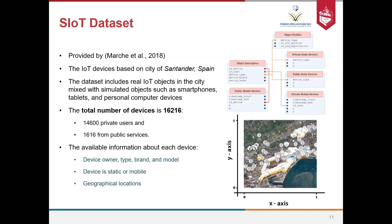In my work, I used a Social Internet of Things dataset from the city of Santander in Spain. This city has many IoT devices — around 16,000 in total. Around 14,000 are private user devices such as smartphones and laptops, and around 1,600 are public service devices. As you can see in the map, there are many types of devices scattered throughout the city of Santander.